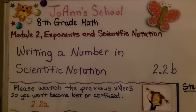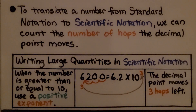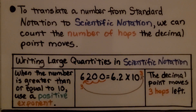Lesson 2.2b: Writing a Number in Scientific Notation. To translate a number from standard notation to scientific notation, we can count the number of hops the decimal point moves.